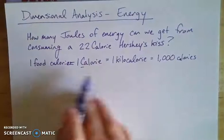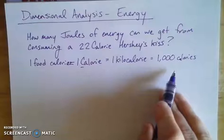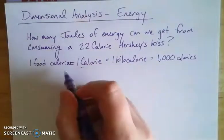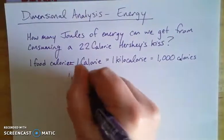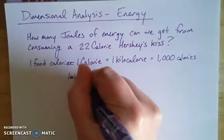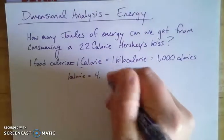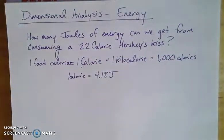So we have: food calories are a capital-C Calorie, which is a kilocalorie, which is equal to 1,000 calories. One of the things you may not know but is look-up-able is the relationship between one little-c calorie and joules, which are SI units. We find that 4.18 joules equals one calorie — 4.184 if we want more sig figs, but let's use 4.18 for this problem.